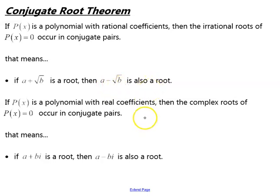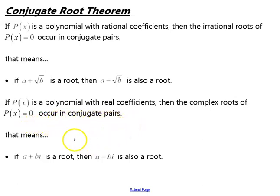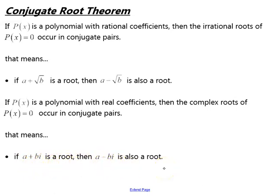Similarly, if p of x is a polynomial with real coefficients, then the complex roots of p of x equals 0 occur in conjugate pairs as well. That means that if a plus bi is a root, then a minus bi is also a root.